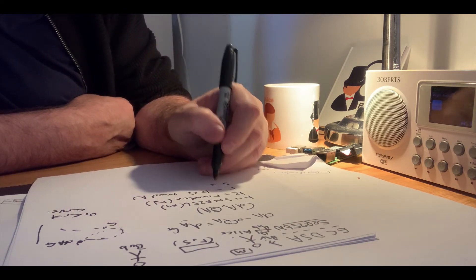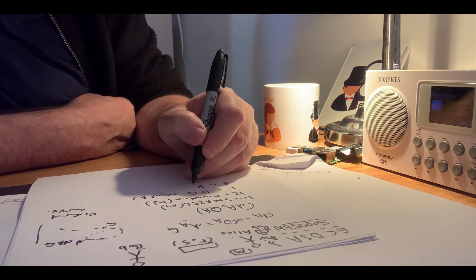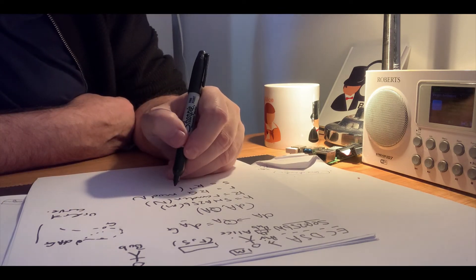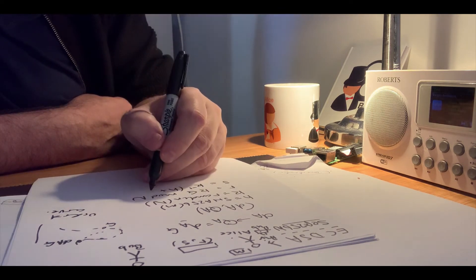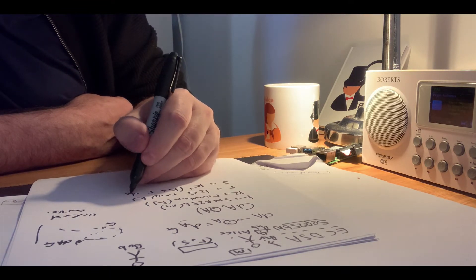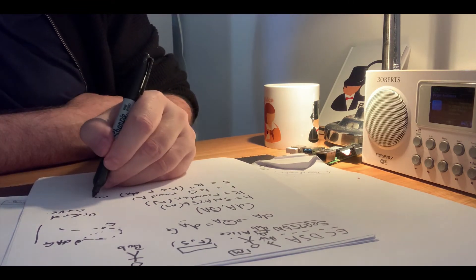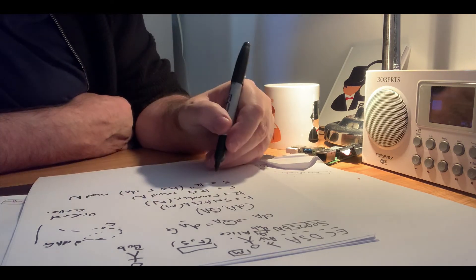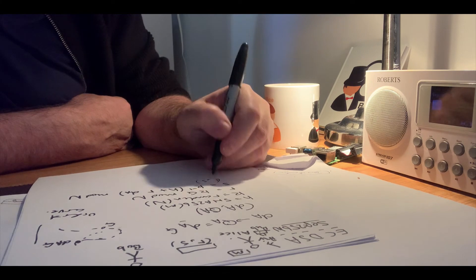Next, she'll take the inverse mod of k and multiply that with the hash plus r times da, and then take the mod of that. The signature then becomes r and s.